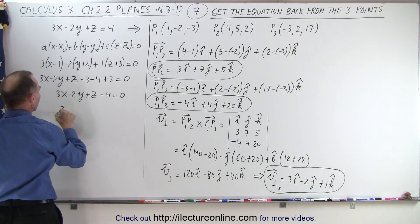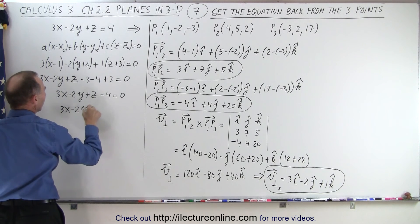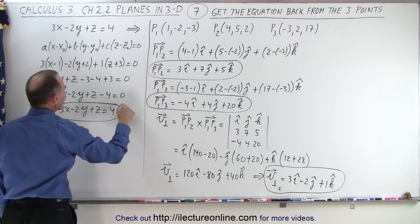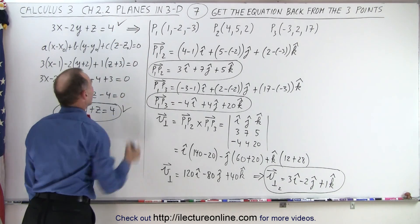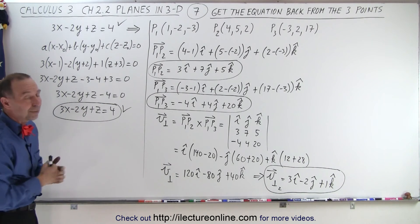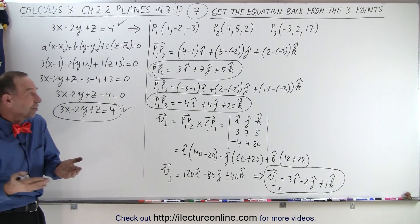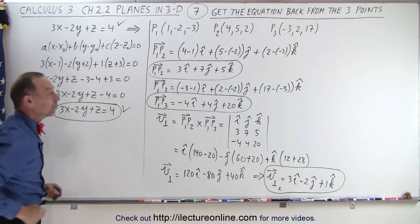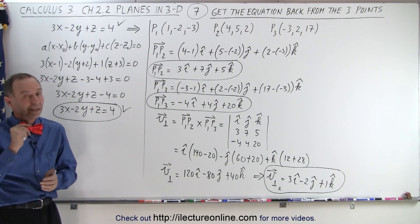And bringing a 4 across, we get 3x minus 2y plus z equals 4. And notice, that's the exact same equation that we started with on the previous video, which means it does seem to work, the technique to find points on a plane seems to be justified, in that we take those points and turn it back into the same equation we started with, and that is how it's done.